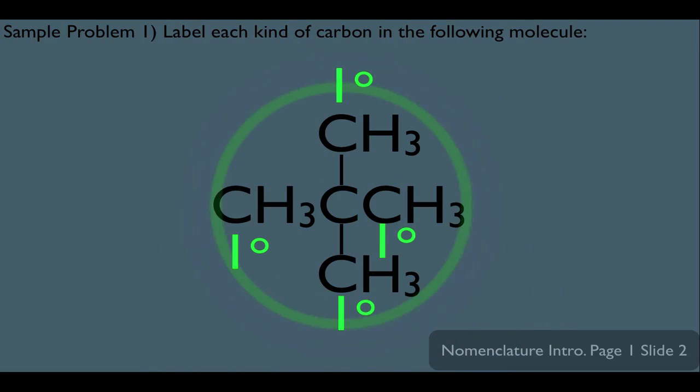However, this central carbon notice has directly connected to him all four. He has this one here. He has this carbon, this carbon, and this carbon all directly connected. This means that he's a quaternary type carbon.